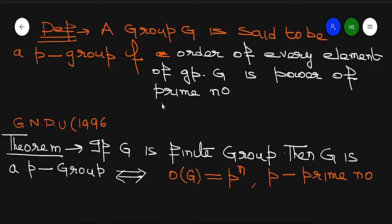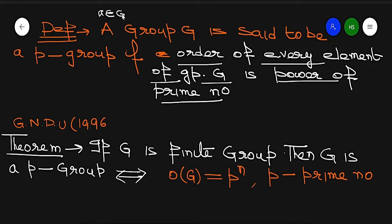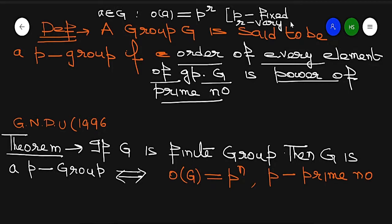If the order of every element of group G is a power of a prime number — for example, if some element a belongs to G, then order of a is equal to P raised to power some positive integer r — where P is fixed for all elements and r may vary. This group is called a P-group.